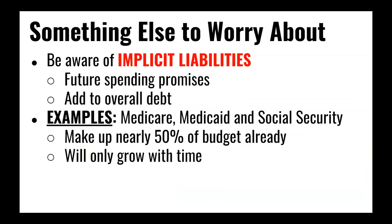There is something else to keep in mind: implicit liabilities. Not everything the government owes is on the books yet — it's something owed in the future, not now. For example, Medicare, Medicaid, and Social Security, which make up nearly 50% of total government spending in a given year, are not necessarily adding to government debt right now. But we know that in the next 5, 10, or 15 years, we're going to have to spend even more on those programs, and we don't have the money to pay for it — which means we'll have to borrow more in the future. So while government debt may be manageable now, implicit liabilities mean it will be even more difficult to handle later on.